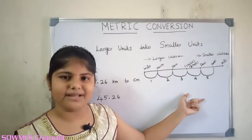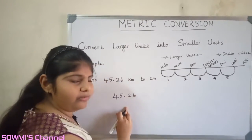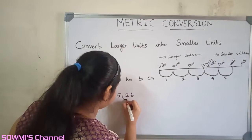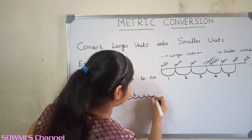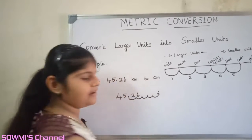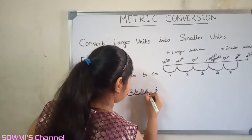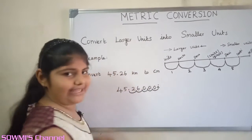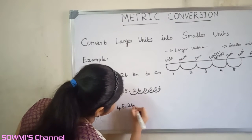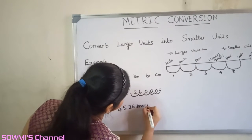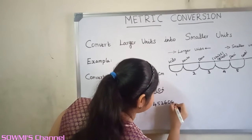There are five jumps to the right. So from the decimal point, we have to move five steps to the right. We have to fill zeros in the extra spaces. So the answer is 45.26 kilometers is equal to 4,526,000 centimeters.